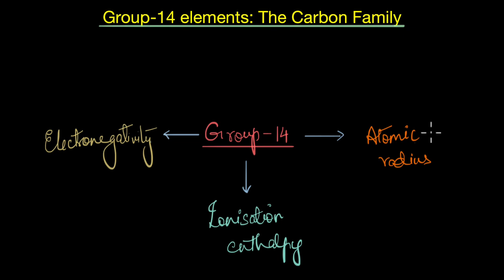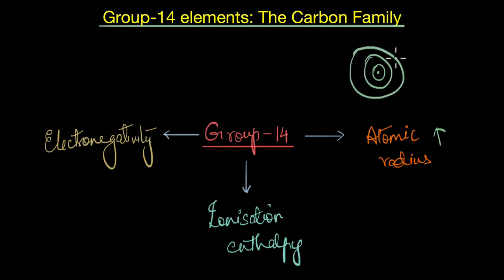Atomic radius in general increases down the group because with successive periods newer and newer shells get added, meaning the valence electrons tend to move farther and farther away from the nucleus. So atomic radius, which is the distance from the nucleus to the valence shell, also increases.